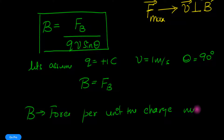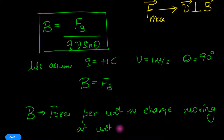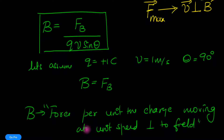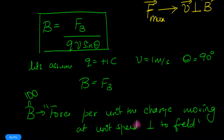That is the definition of the magnetic field strength. If I told you the magnetic field strength is 100, it means that a 1-coulomb charge moving perpendicular to the field at 1 meter per second would experience a force of 100 newtons. The unit of the magnetic field from this expression turns out to be newtons per coulomb times seconds per meter.